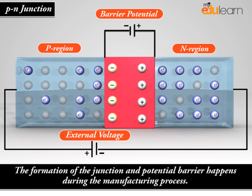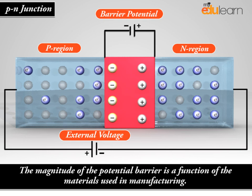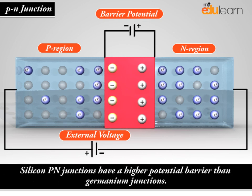The formation of the junction and potential barrier happens during the manufacturing process. The magnitude of the potential barrier is a function of the materials used in manufacturing. Silicon P-N junctions have a higher potential barrier than germanium junctions.